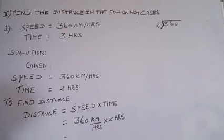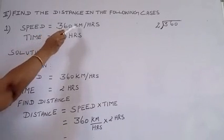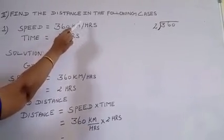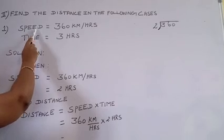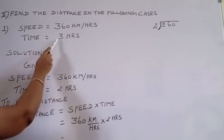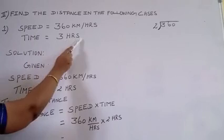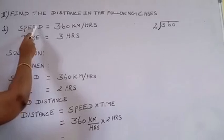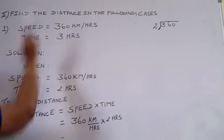Our first problem is speed is equal to 360 km per hour. So km per hour is the unit of speed. The time is equal to 3 hours. Hours is the unit of time. So they give in speed and time, we need to find the distance.